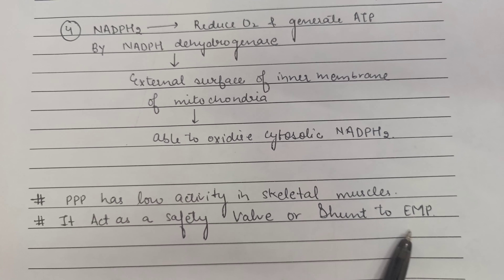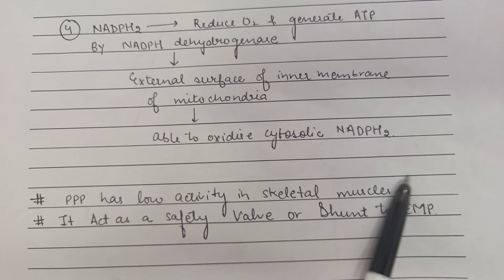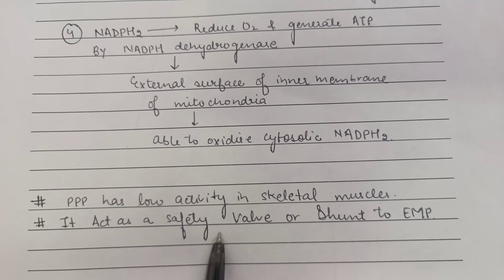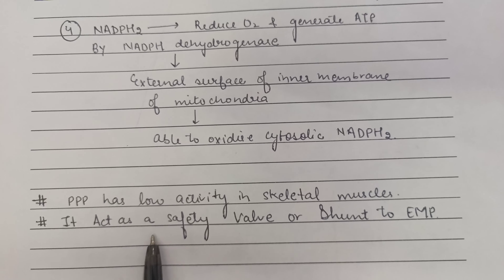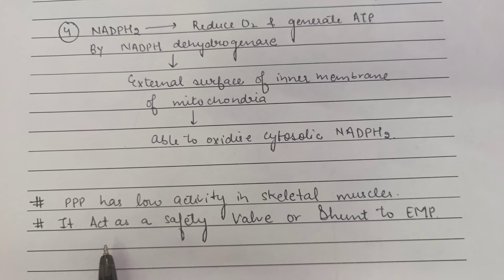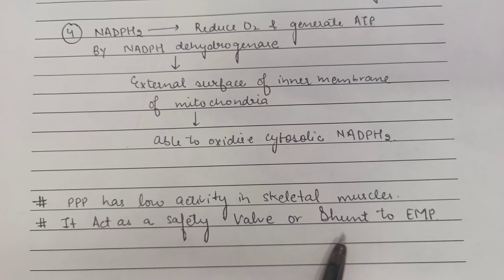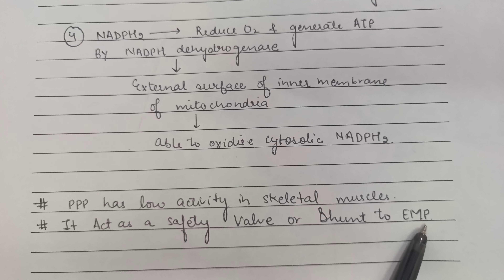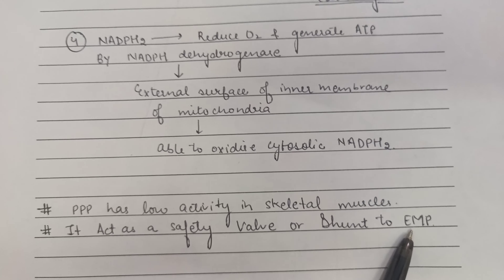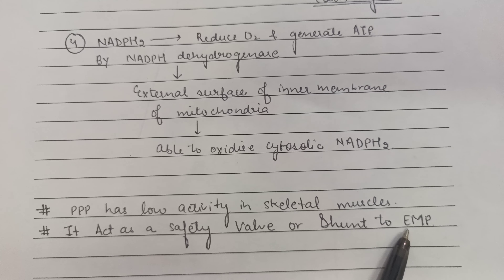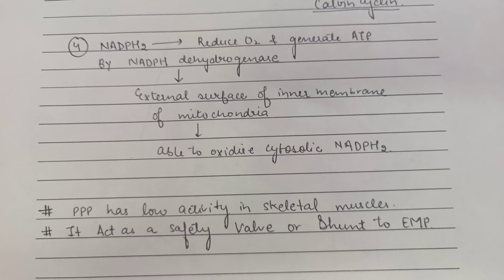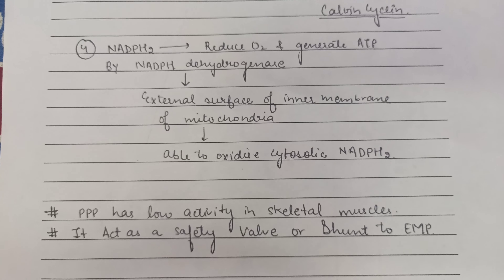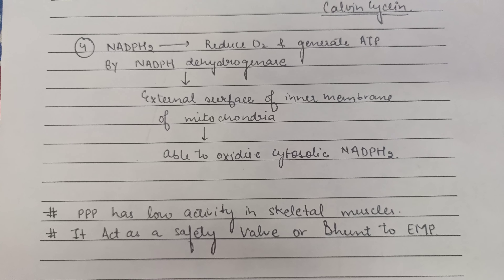Finally, the pentose phosphate pathway has low activity in skeletal muscles, and it acts as a safety valve or shunt to the Embden-Meyerhof-Parnas (EMP) pathway. That is all about the pentose phosphate pathway and hexose monophosphate shunt.